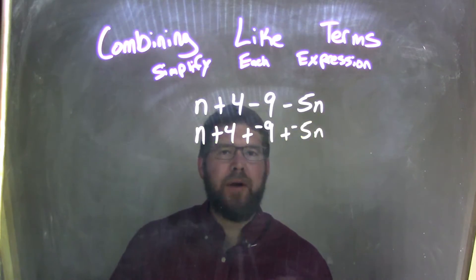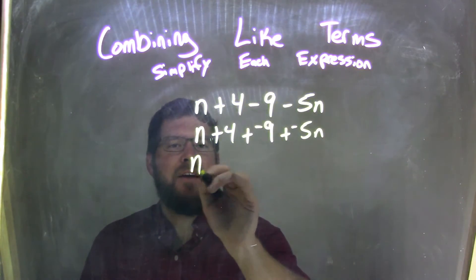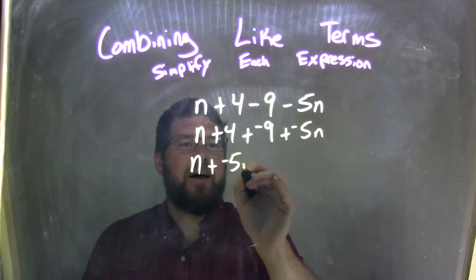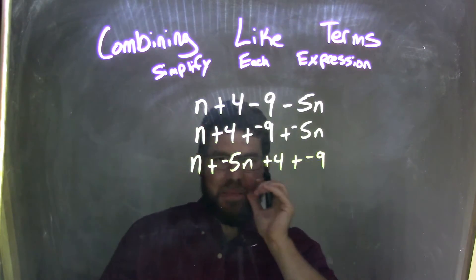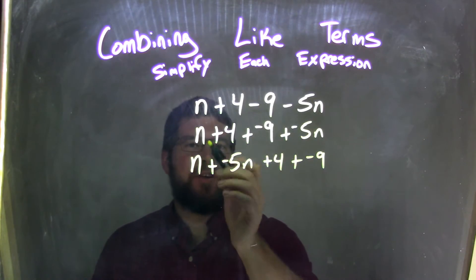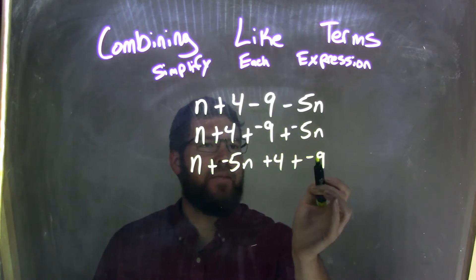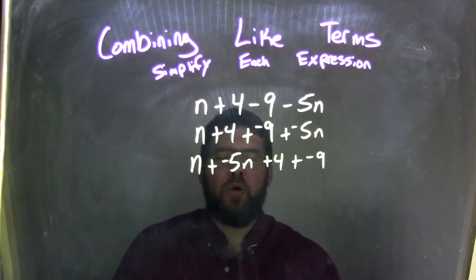So now I'm going to rearrange to put our like terms next to each other. So basically, I'm just putting the negative 5n right here. So we have n plus a negative 5n plus 4 plus a negative 9. Let's double check and make sure I have all the parts. n is right here, 4 is right there, negative 9 is right there, and negative 5n is right there. I've rearranged everything. I didn't lose any terms on the way.